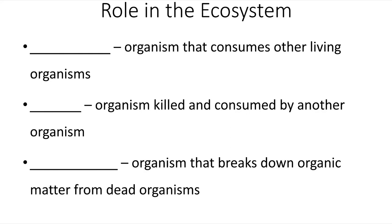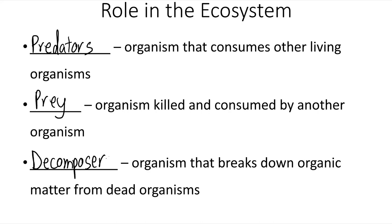Looking at roles in an ecosystem, we have predators — organisms that consume other living organisms — and prey, which are organisms that are killed and consumed by other organisms. We also have decomposers. Even an apex predator that has no organisms preying upon it will, when it dies, be decomposed and broken down, returning nutrients to the ecosystem. In our next video, we'll talk about what causes an animal to be in danger of going extinct.